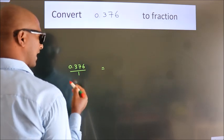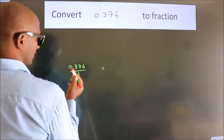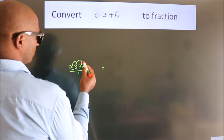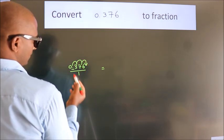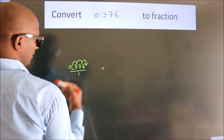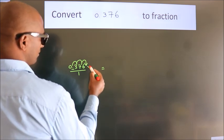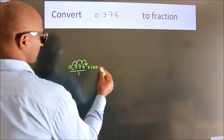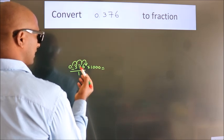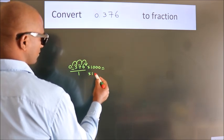we have to move this decimal after 1, 2, 3 numbers. To move this decimal after 3 numbers, we have to multiply it with 1,000. Whatever number you are multiplying in the numerator, in the denominator also do the same.